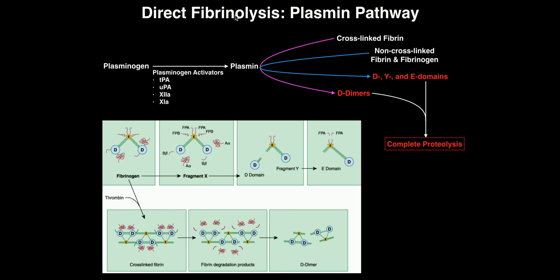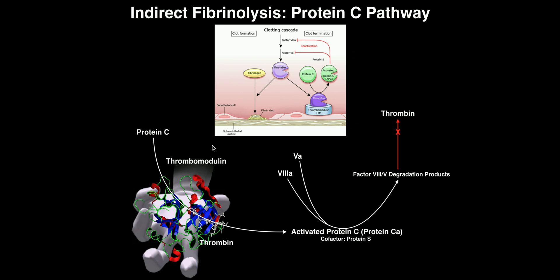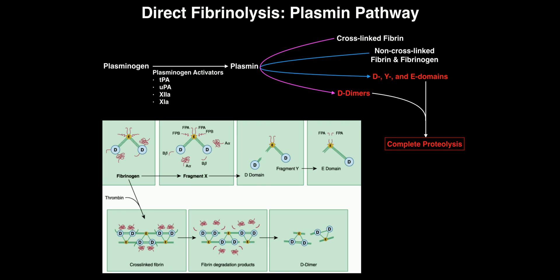If you want to completely cover coagulation, you have to discuss fibrinolysis, which you can think of as the regulation of coagulation — because you don't want this fibrin clot remaining there forever. Eventually it has to be degraded away. Under normal circumstances in a healthy individual, you cut yourself, coagulate, and get a fibrin clot. But eventually these endothelial cells heal and the fibrin clot is degraded away. You don't want it to detach and occlude a blood vessel, so plasmin and all these fibrinolysis pathways completely degrade that fibrin clot so that you maintain your cardiovascular health.